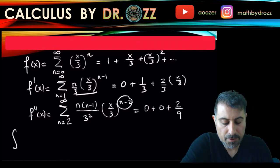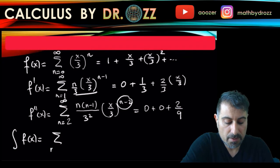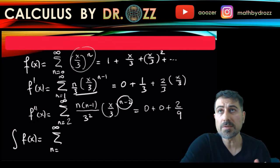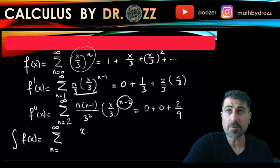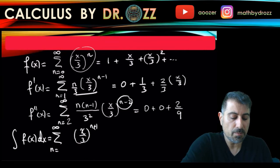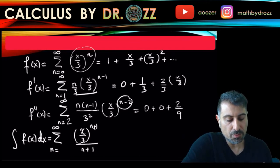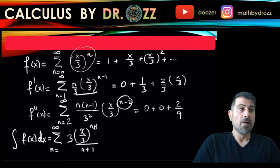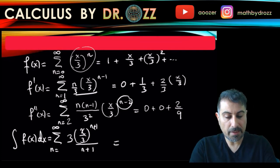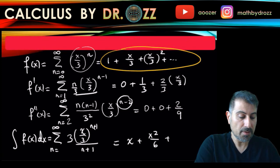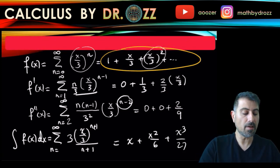Now for the anti-derivative of f. I'm going to integrate term by term. You can use u-substitution — if u equals x over 3, then du is 1 third dx, so a factor of 3 comes along. Integrating x over 3 to the power of n gives x over 3 to the power of n plus 1, divided by n plus 1, times 3. The first terms work out to x, then x squared over 6, then x cubed over 27, and so on, plus C.